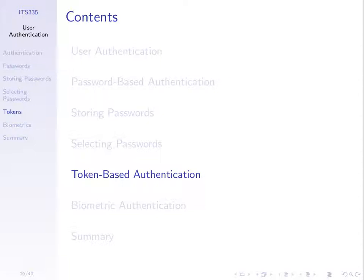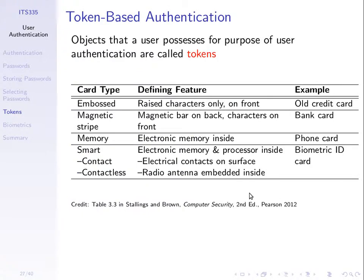Now let's look quickly at using tokens — just to define what we mean by a token — and then biometric authentication. By tokens, quite briefly, we mean some object that the user has, that they possess, and they use it for authenticating. We call that a token. Different types: they may be cards, they may be USB drives — some object that we have. We can even think of a mobile phone as a token now.